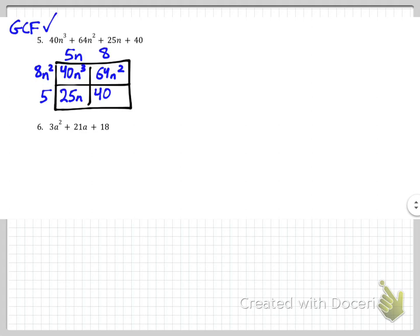5n is the GCF of the left column. And 8 is the GCF of 64n² and 40. So real quick, I'm going to check these. Right here, 5n times 8n² is indeed 40n³. 8n² times 8 is 64n². 5 times 5 is 25, and the n makes it 25n. And 8 times 5 is indeed 40. So you want to go through and check all of those, make sure you got the correct setup. Once you do that, now we can write down (5n + 8)(8n² + 5).